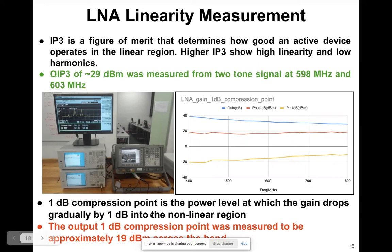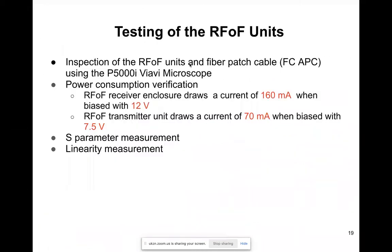Another set of measurements is the 1 dB compression point, which determines at which power level the system operates in the nonlinear region. The 1 dB compression point at the output is around 19 dBm — if we exceed that, the LNA will start saturating.